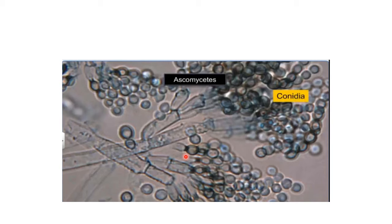Ascomycetes undergo both asexual and sexual modes of reproduction. The asexual mode produces spores known as conidia. Conidia are produced on specialized mycelium known as conidiophores. These conidia on germination produce a new mycelium.